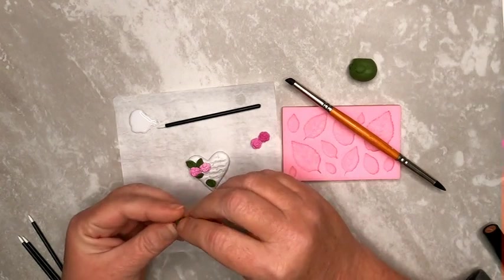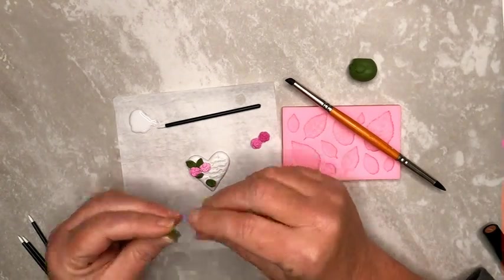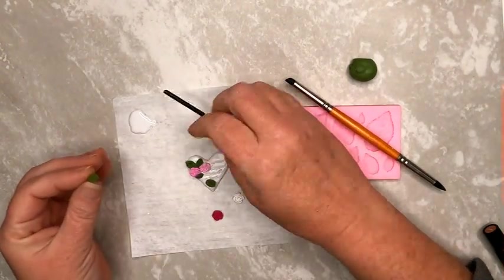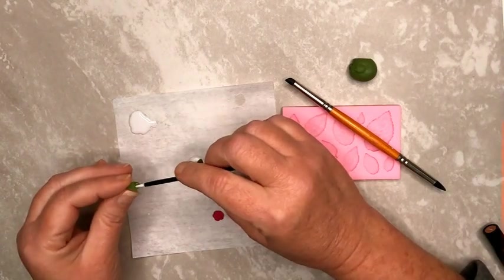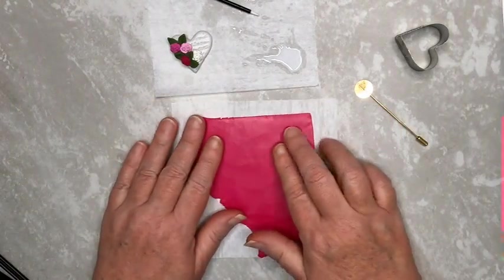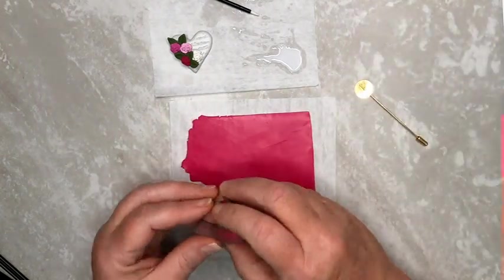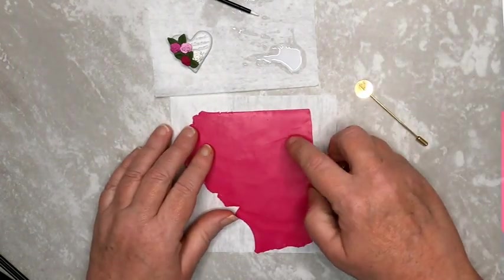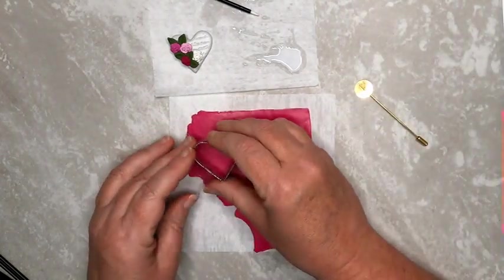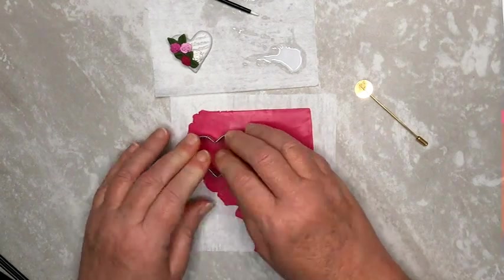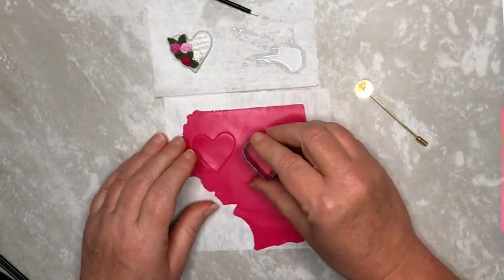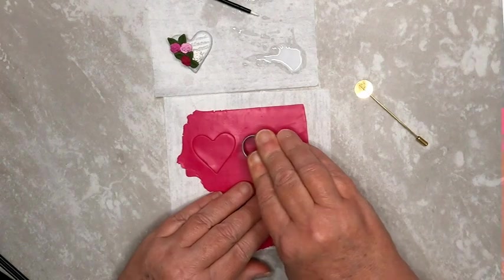Then bake the heart at the manufacturer's recommended temperatures, tented, for at least 30 minutes. When the heart is baked and cooled, roll out some fuchsia clay to the medium setting of your pasta machine, and then cut two hearts from the fuchsia clay.